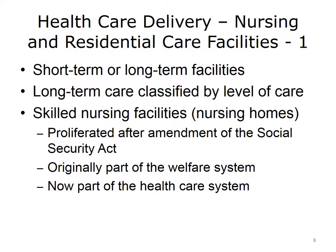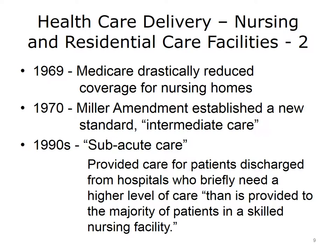Long-term care is classified by level of care. A patient with relatively few health needs may reside in an assisted living facility, whereas a patient with significant needs may require a nursing home. Skilled nursing facilities, also called nursing homes, initially proliferated after an amendment of the Social Security Act. They were originally part of the welfare system and gradually shifted to become part of the current health care system. In 1969, as the cost of Medicare increased, the Department of Health and Human Services drastically reduced coverage for nursing homes.